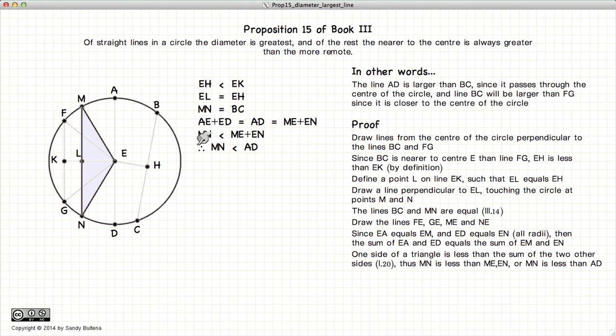Now, if MN is less than ME plus EN, and ME plus EN is equal to AD, we have just demonstrated that MN is less than AD. That's the first step of our proof.